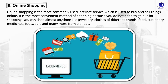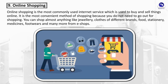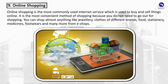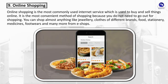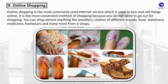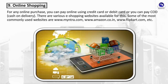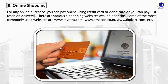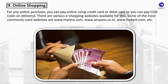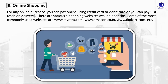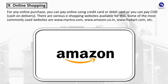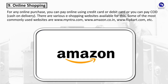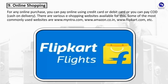Online Shopping is the most commonly used internet service used to buy and sell things online. It is the most convenient method of shopping because you do not need to go out. You can shop almost anything like jewelry, clothes, food, stationery, medicines, footwear, and more from e-shops. For any online purchase, you can pay using credit card, debit card, or cash on delivery (COD). Commonly used e-shopping websites include www.myntra.com, www.amazon.co.in, and www.flipkart.com. Amazon is the world's largest online retailer and prominent cloud services provider.